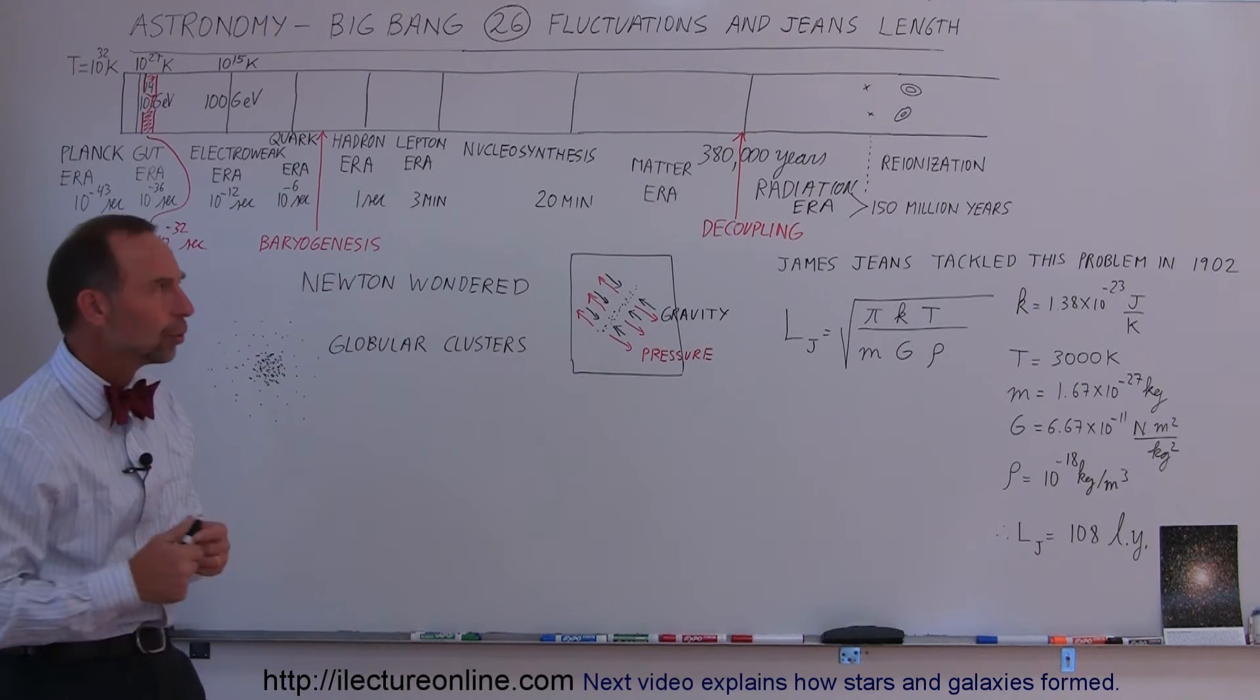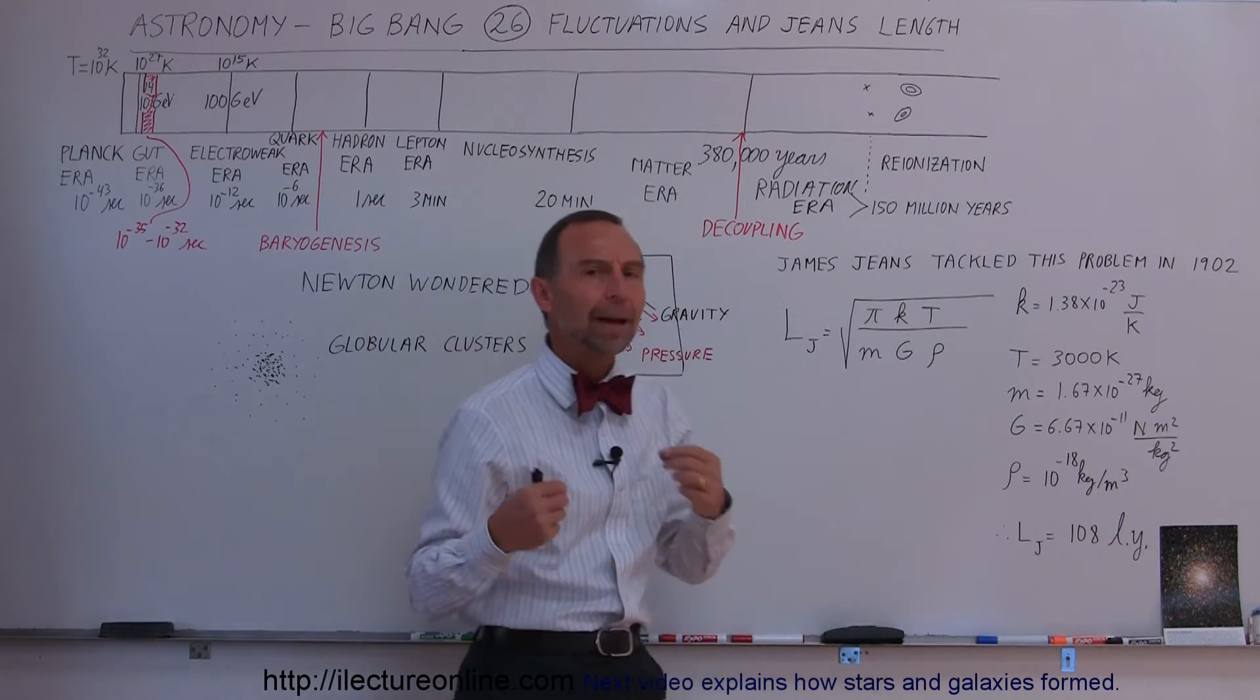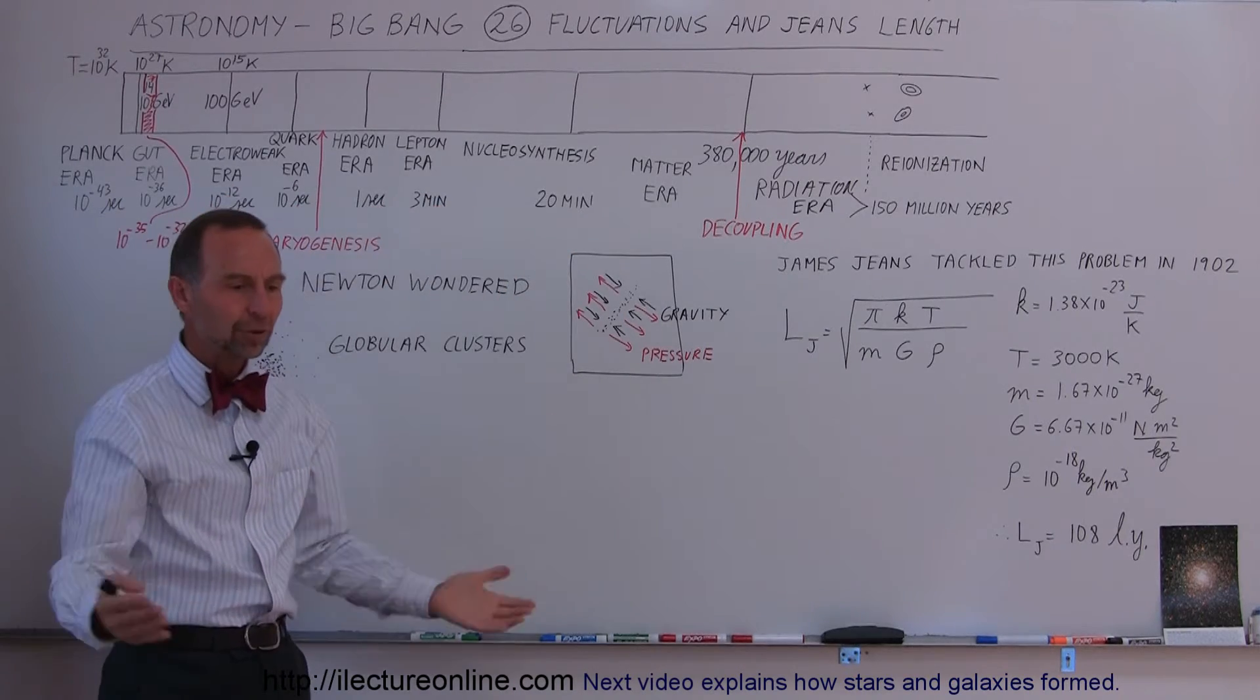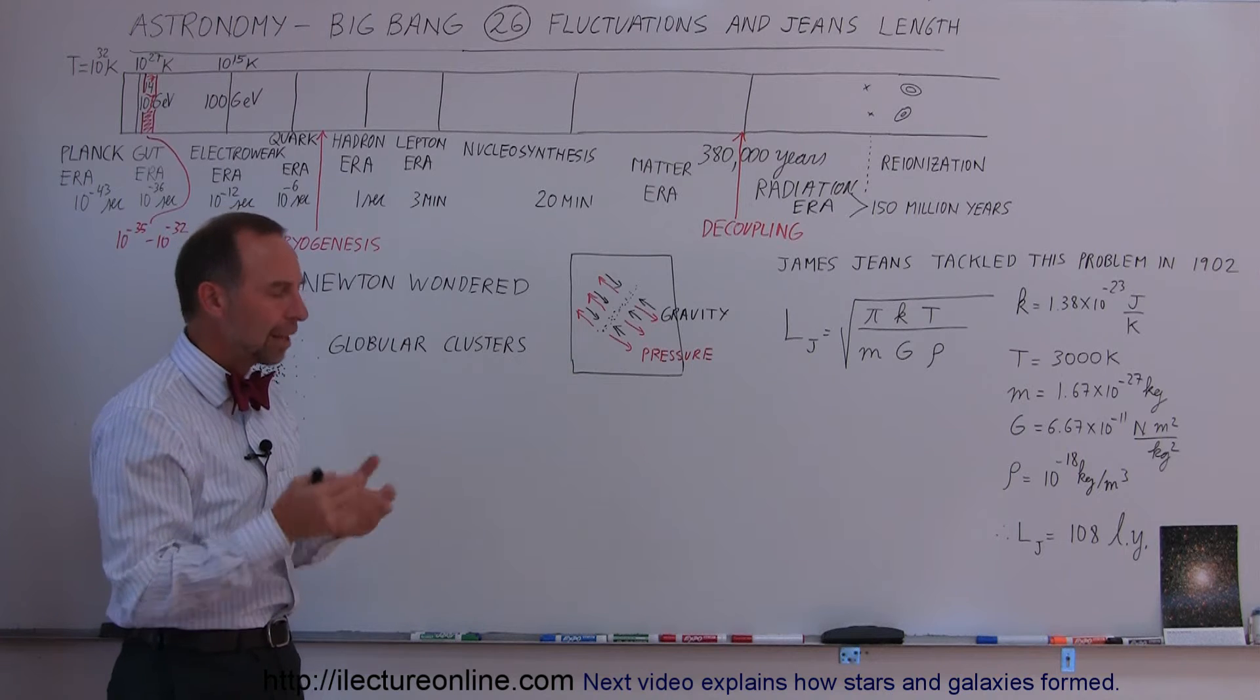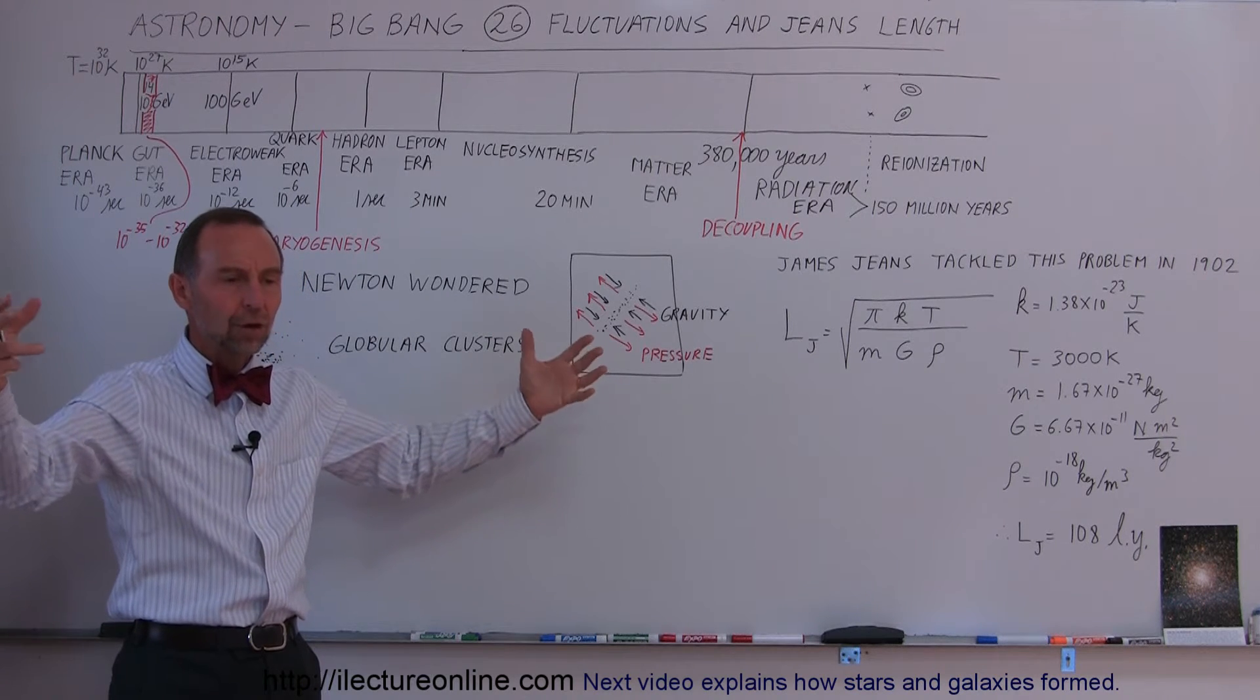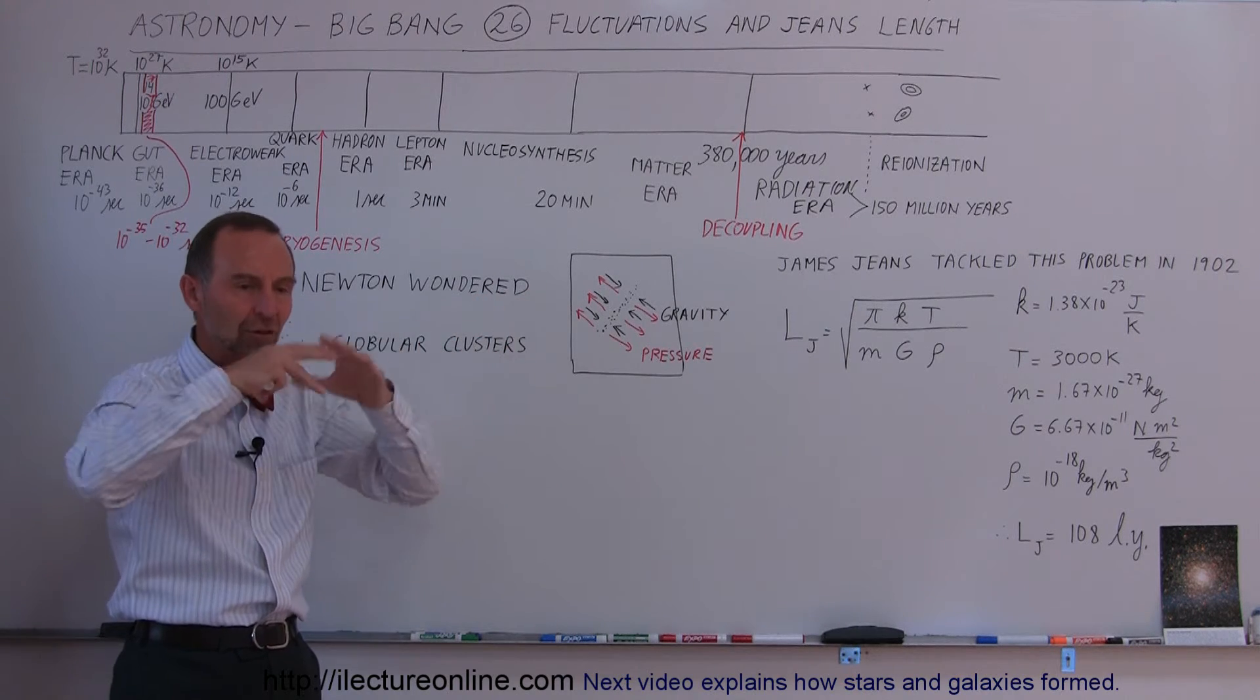Well it wasn't until 1902 when James Jeans came along and he tackled this problem in a more mathematical way. He actually calculated the region of influence required to cause gravity to push atoms together in a close enough pack so that stars could actually form. And so he actually tried to figure out how big of a region is required to have enough gravity there, enough matter there to make it coalesce into something like a star.